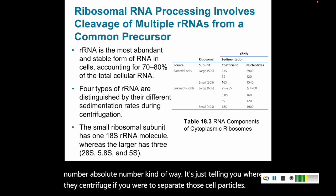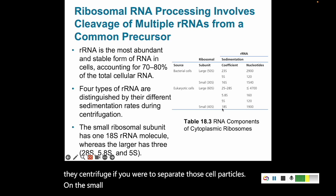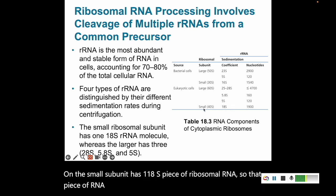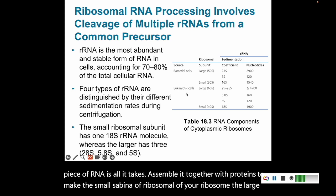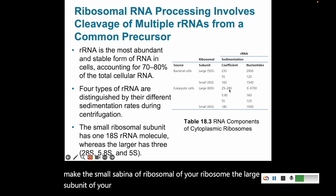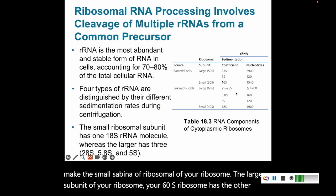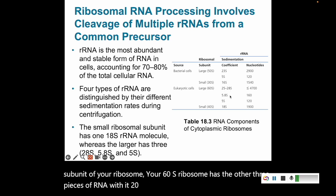The small subunit has one 18S piece of ribosomal RNA — that piece of RNA assembled together with proteins makes the small subunit of your ribosome. The large subunit, your 60S ribosome, has the other three pieces of RNA: 25S, 5.8S, and 5S.